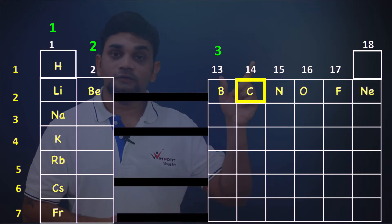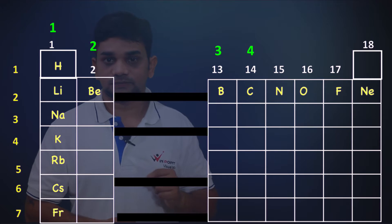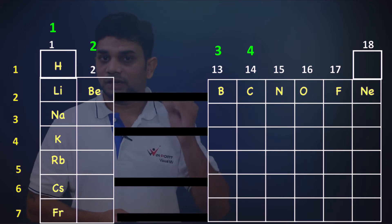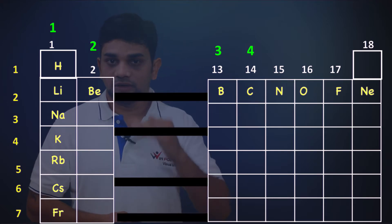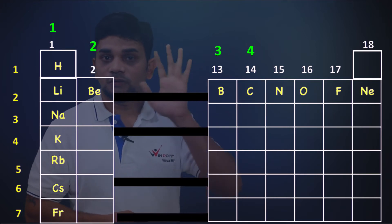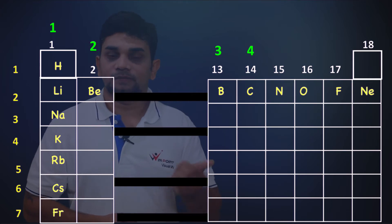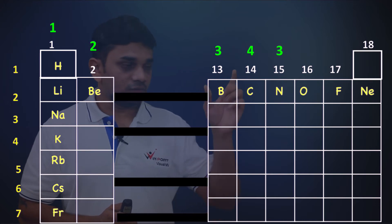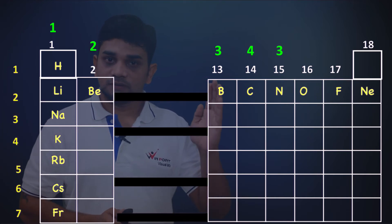Carbon is in group 14, which means four electrons in the outermost shell, so its valency is 4. Nitrogen is in group 15 — five electrons in the outermost shell. Since five is more than four, the atom accepts electrons; nitrogen accepts three electrons to complete the octet, so its valency is 3. So across the period, valency increases up to 4 and then decreases.